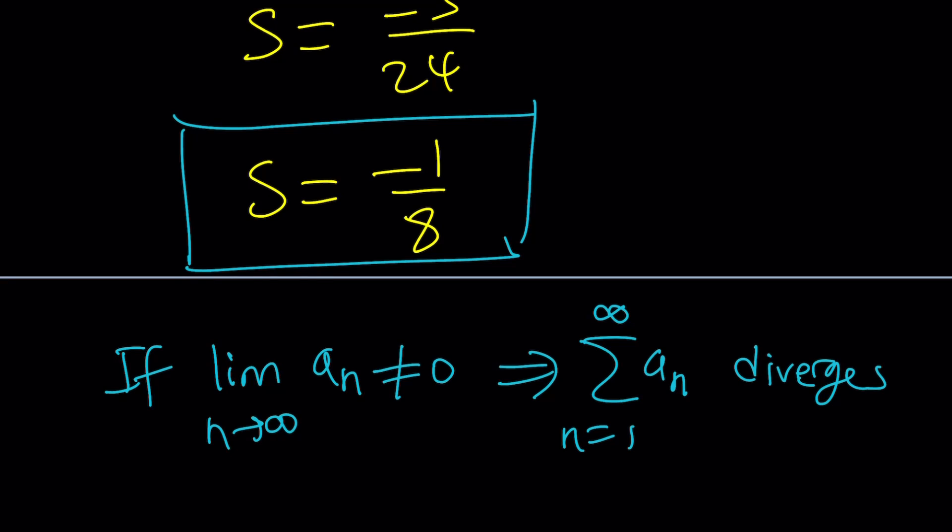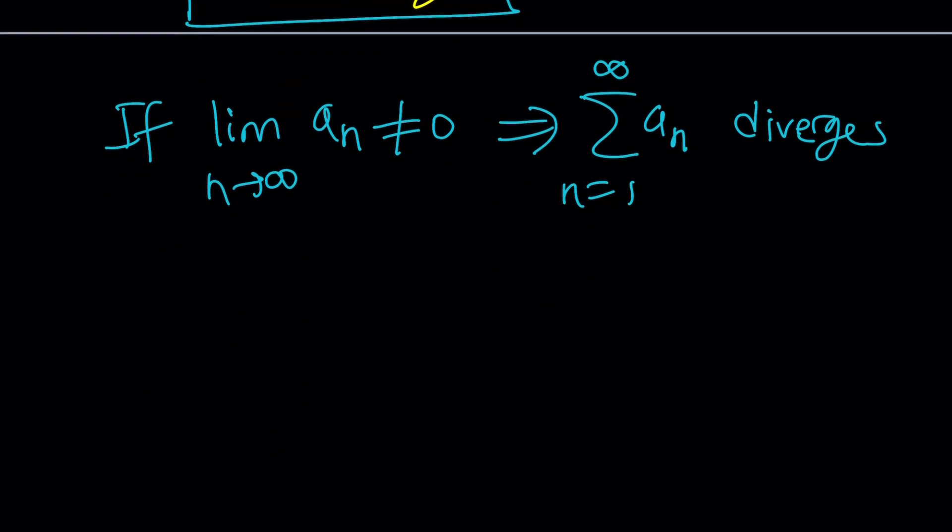Now, if this limit is 0, that doesn't necessarily mean the series converges. But at least we know when it's not 0, it does diverge. So, if you take a look at our series, whose general term is n,